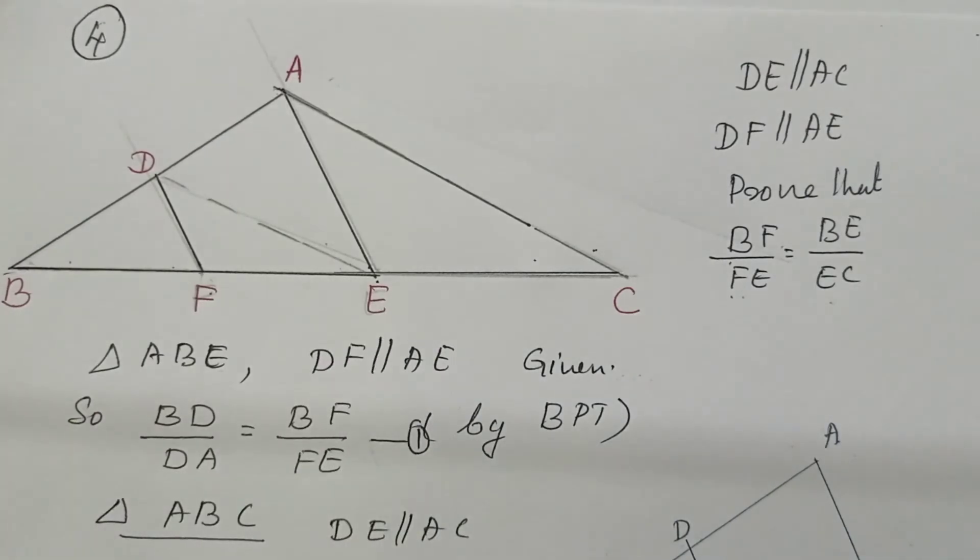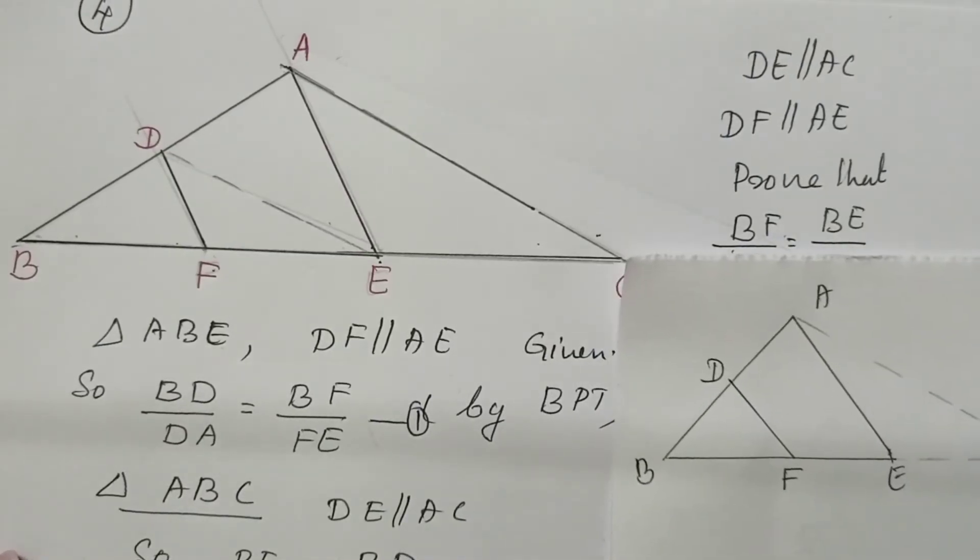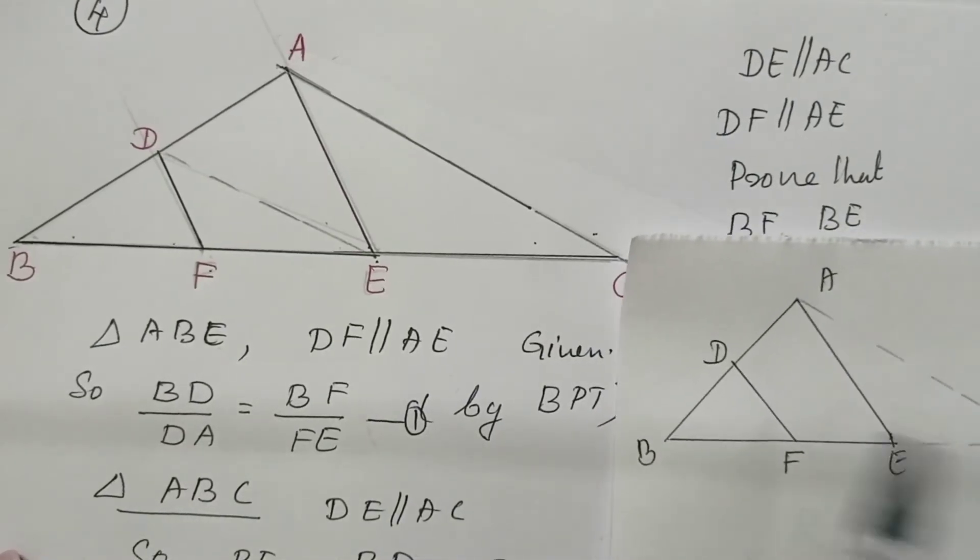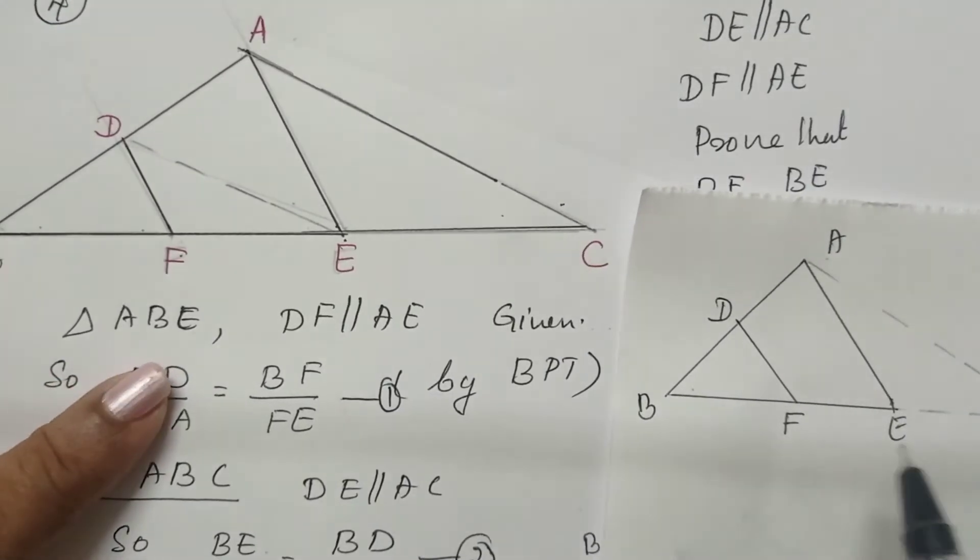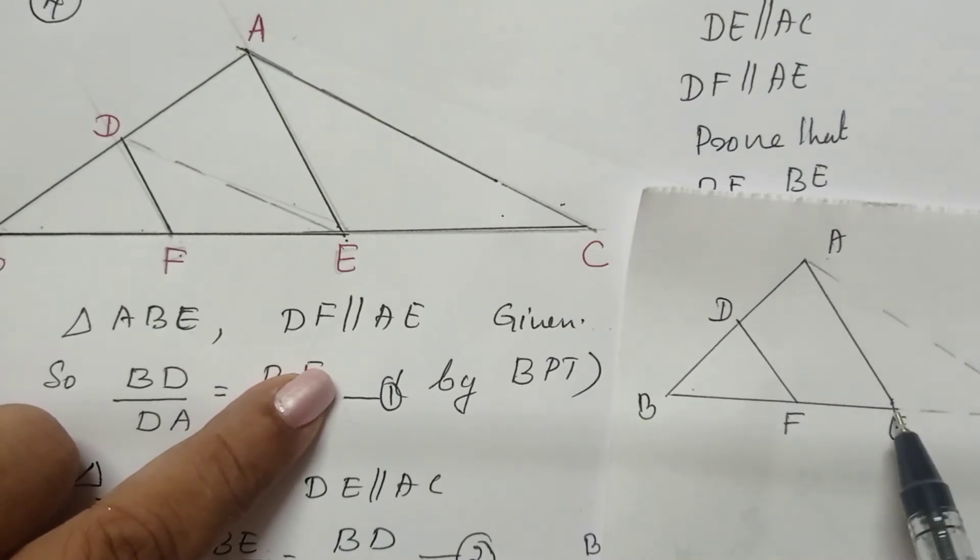In the question, given that DE is parallel to AC. Now look at this small triangle ABE. DF is parallel to AE.